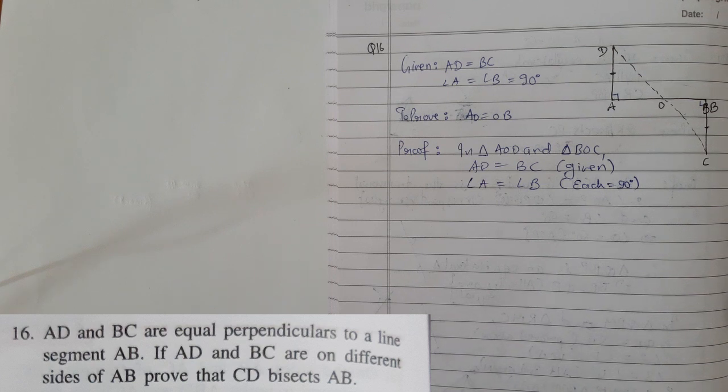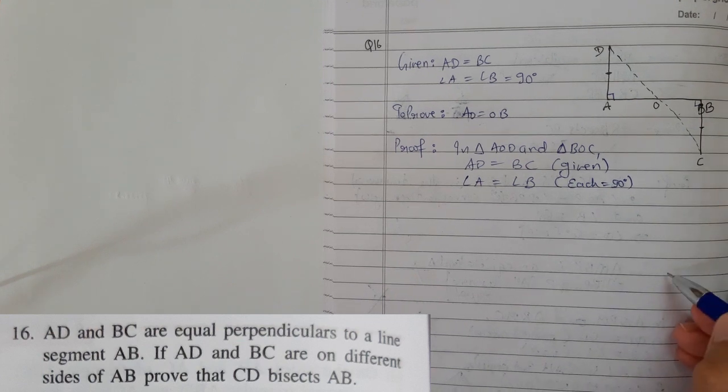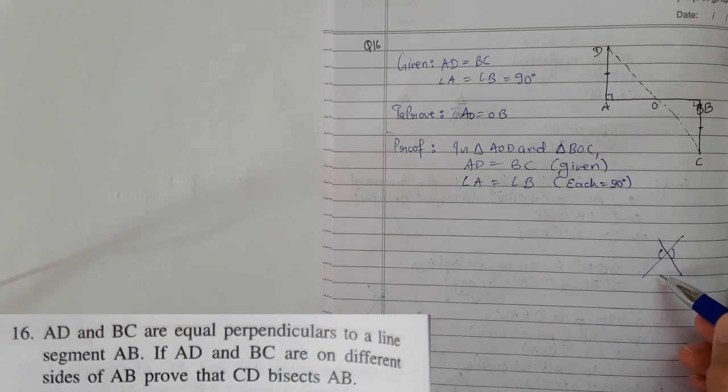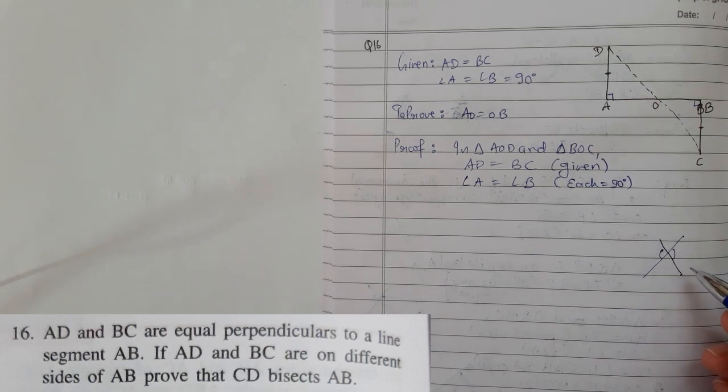But if they give you something like this, the cross thing, every time whenever there is a cross line or you can say intersecting lines, there is vertically opposite angle property.